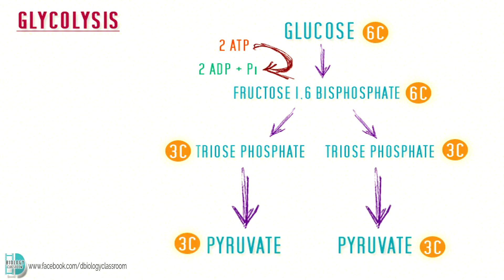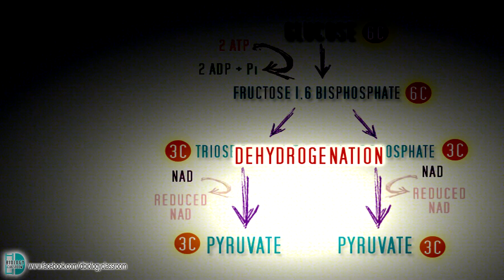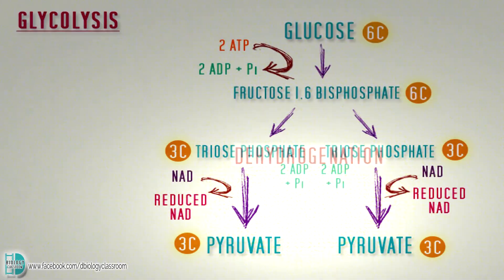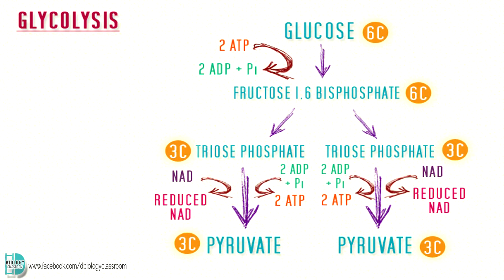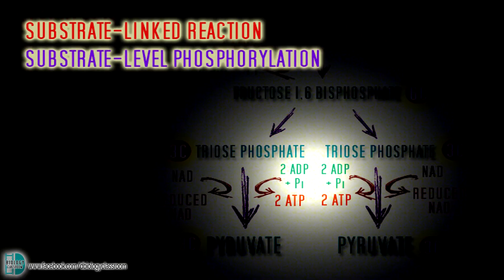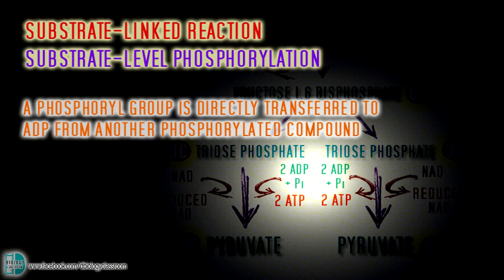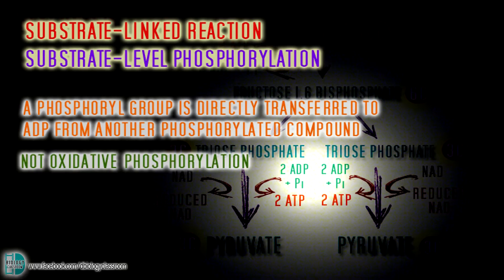Triose phosphates are further oxidized to pyruvate. Dehydrogenations occur, where hydrogen is removed from triose phosphate and accepted by a coenzyme named NAD, turning it into reduced NAD. There is a small yield of ATP here, known as substrate-level phosphorylation, meaning a phosphoryl group is directly transferred to ADP from another phosphorylated compound. This is not oxidative phosphorylation.